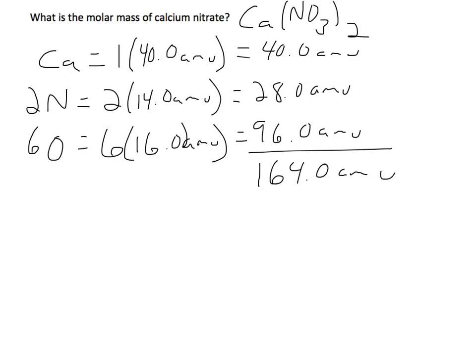Now this means that one mole of calcium nitrate has a mass of 164 grams, so its molar mass is just equal to 164 grams per mole.